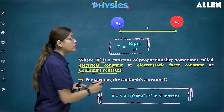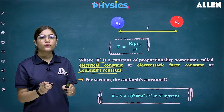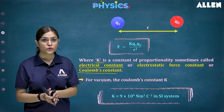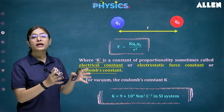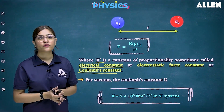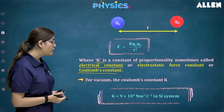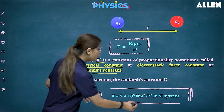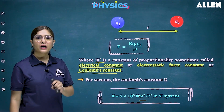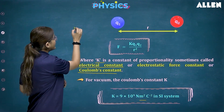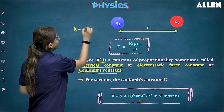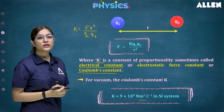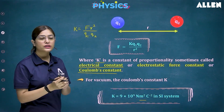K is a constant, meaning it has a fixed value. The value of K is equal to 9 times 10 to the power 9. We can derive the units from K equals F r squared upon Q1 times Q2. The unit of force is Newton, the unit of distance is meter, so we have meter squared.